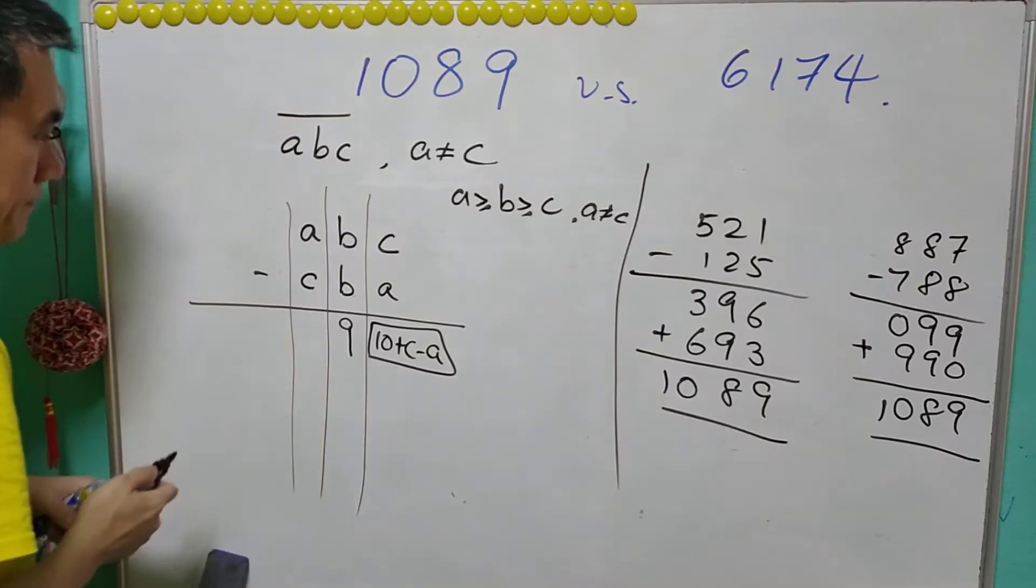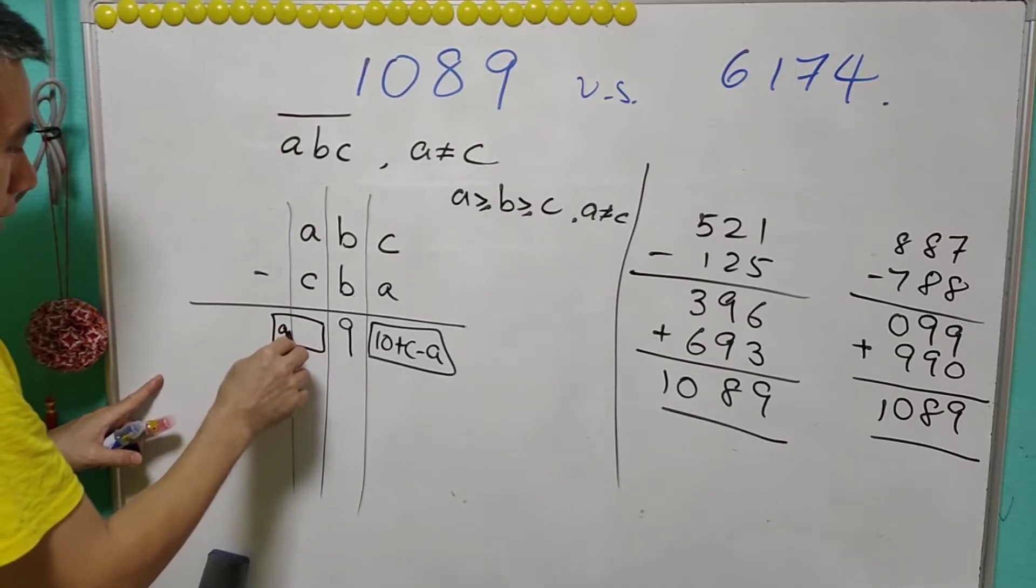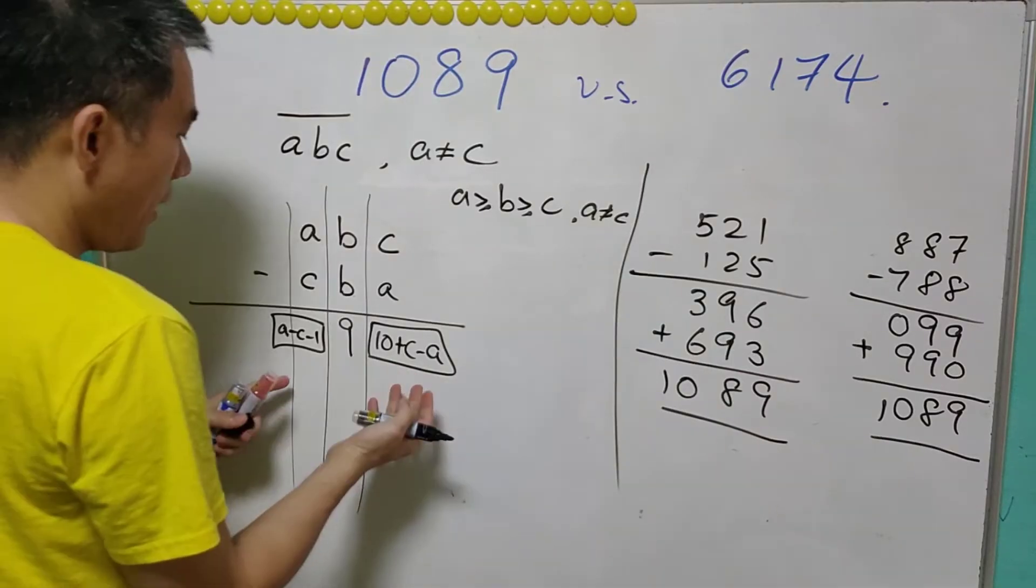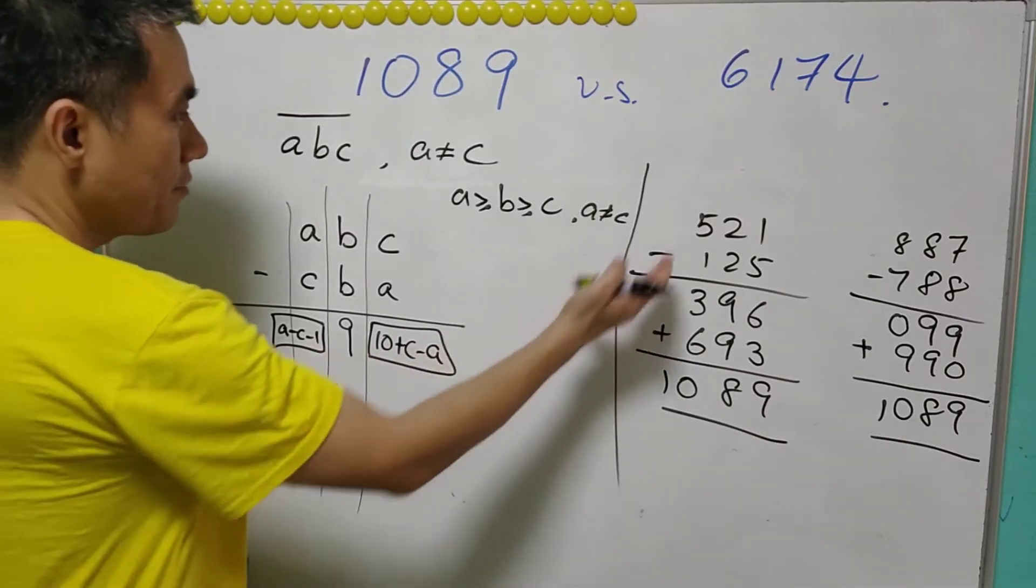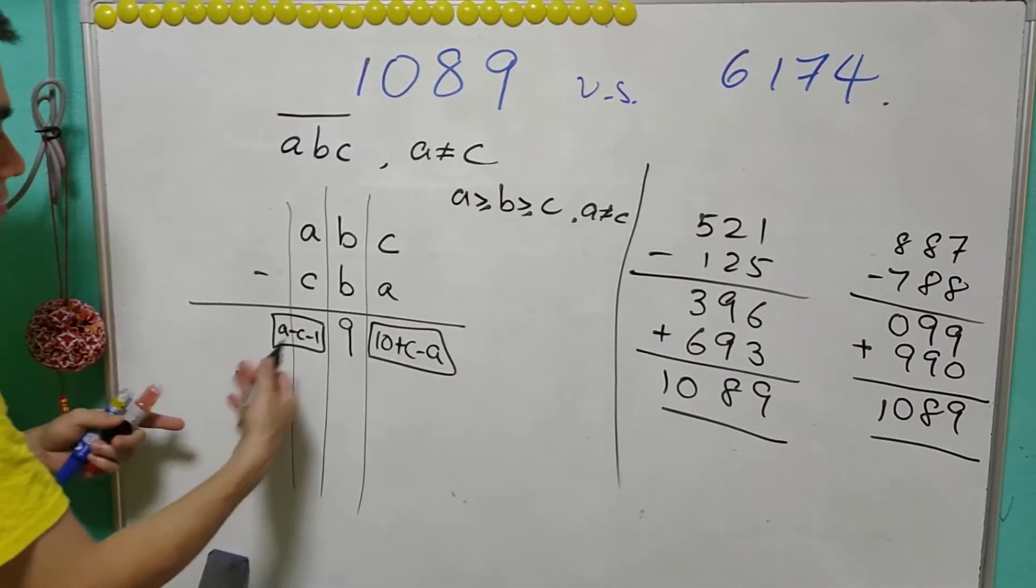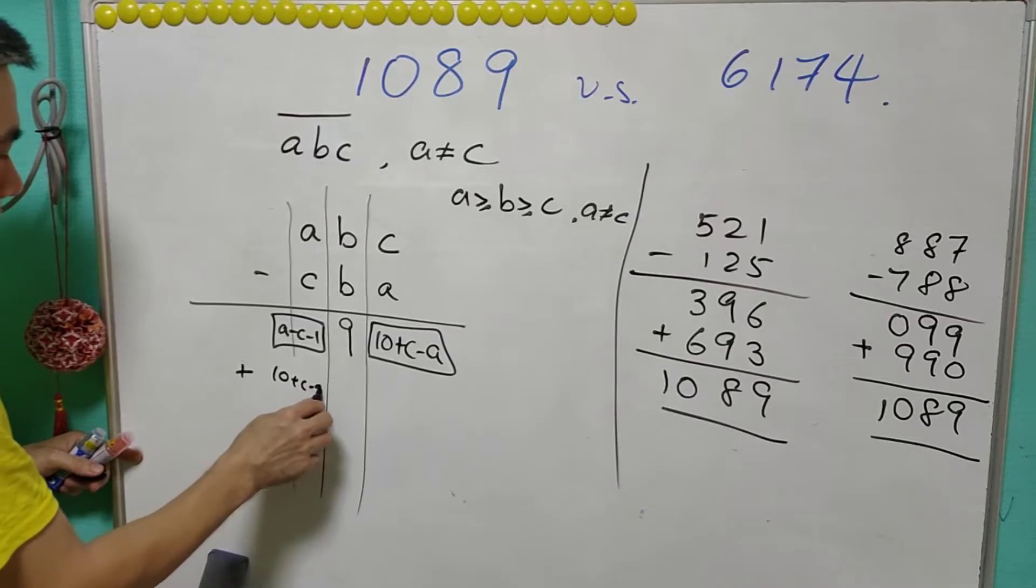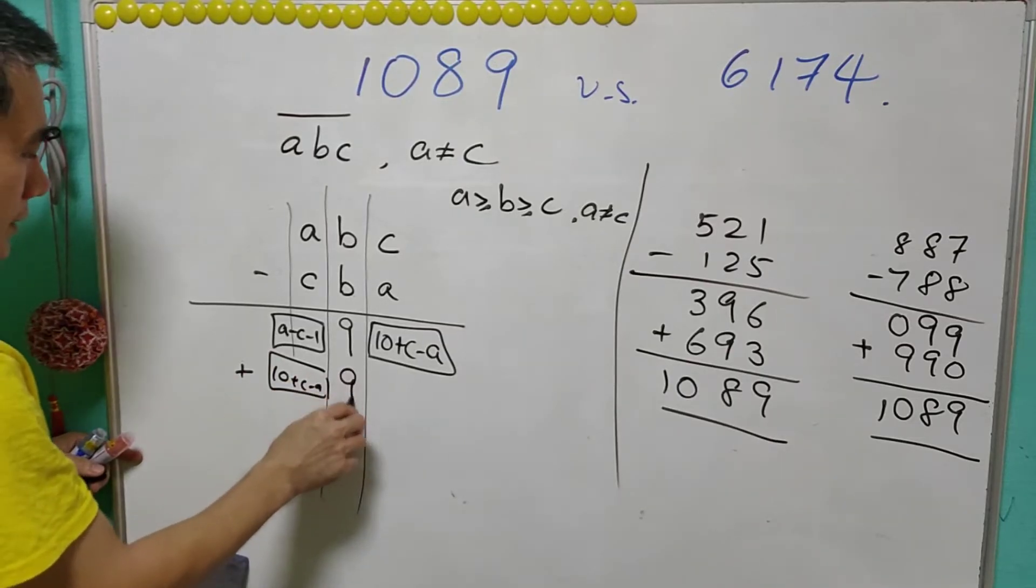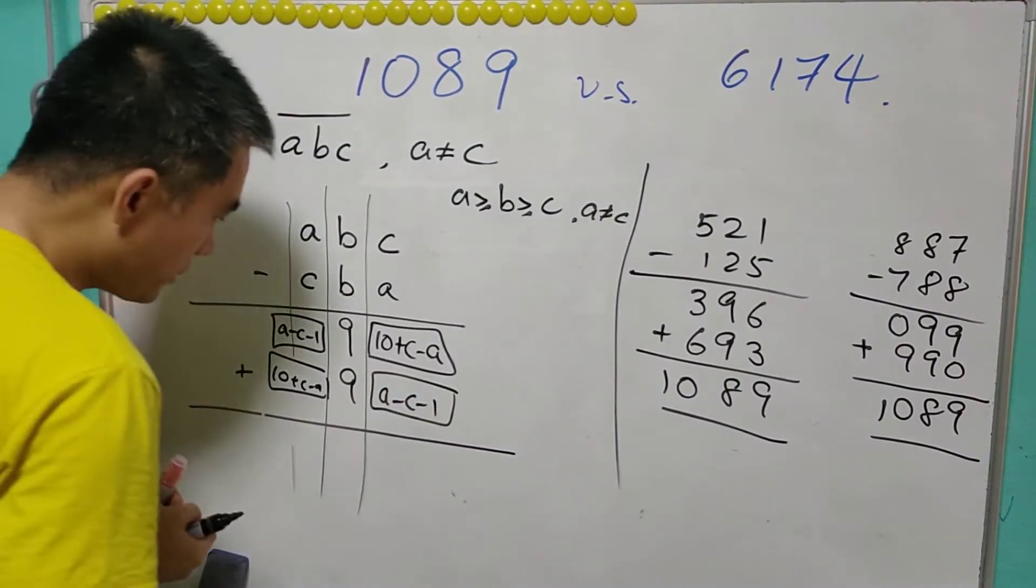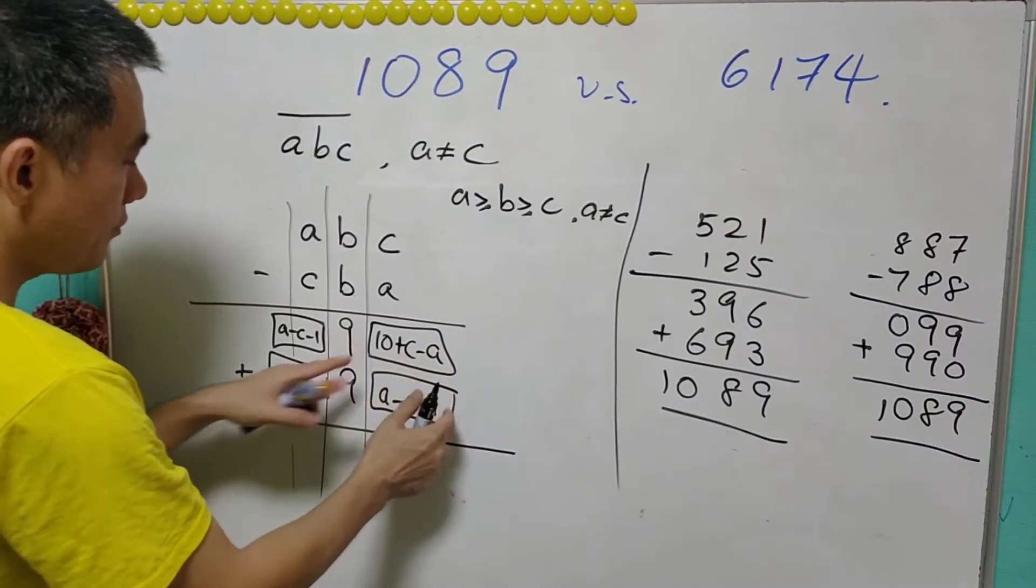The second digit should always equal 9, and the first digit is always equal to A minus C minus 1. This is the three digit number. The next operation is we take the reverse order of this number: that is (10 + C - A), 9, (A - C - 1), and we add these two three digit numbers.